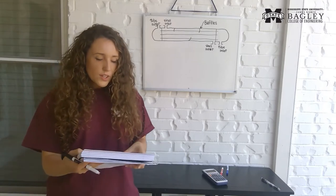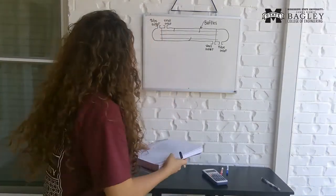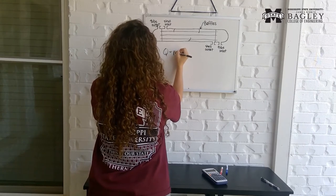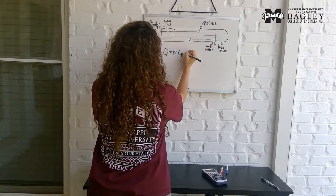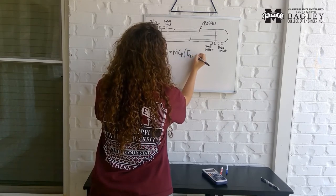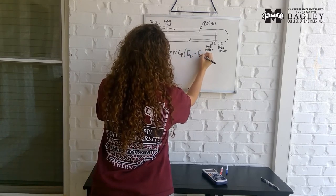So the equation that we're using is going to be q is equal to m dot cp times t exit minus t enter.